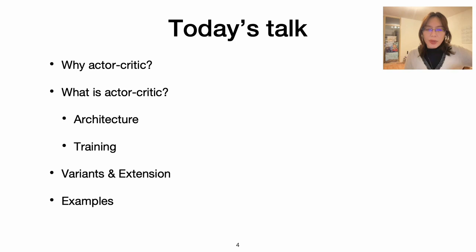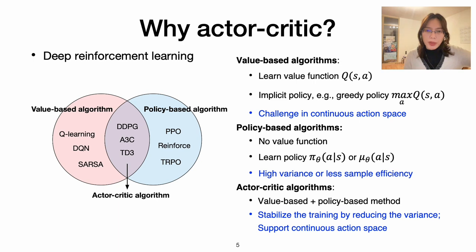As we introduced before, value-based algorithms have challenges in searching the continuous action space. And policy-based algorithms have high variance, which quite depends on the search trajectory. So actor-critic is proposed to solve these two problems, as it can combine the advantages of both algorithms. It can stabilize training by reducing the variance, and also it can support continuous action space.